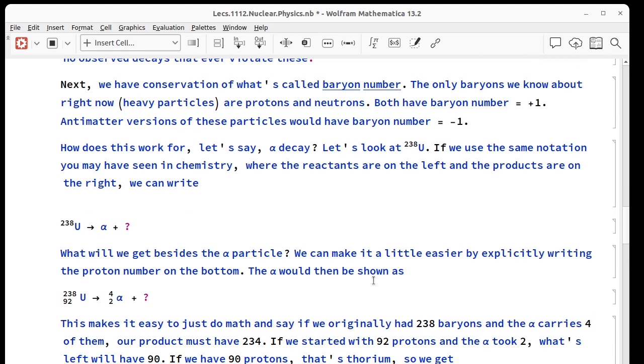A little bit less crucial, we have conservation of baryon number. The only baryons we're going to talk about in this course, baryon means heavy particle, are protons and neutrons. They are both assigned a baryon number of plus 1. Antimatter versions of these, so anti-neutrons or anti-protons, would have a baryon number of minus 1.